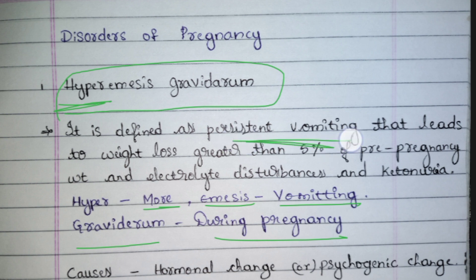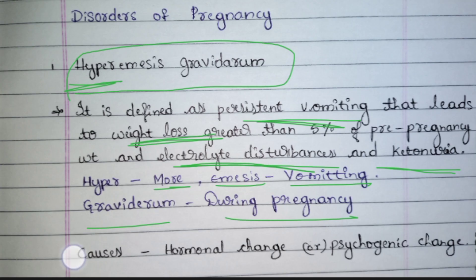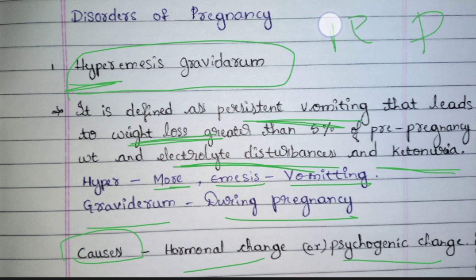Because of this excessive vomiting there will be weight loss, which is clearly visible. Because of this there will be water and electrolyte imbalance and even ketonuria. The cause for this is hormonal change and psychogenic change. Hormonal change is because at the time of pregnancy estrogen and progesterone levels will be increasing vigorously — because of these hormones, vomiting sensation is seen. Psychogenic change is due to anxiety in the patient.